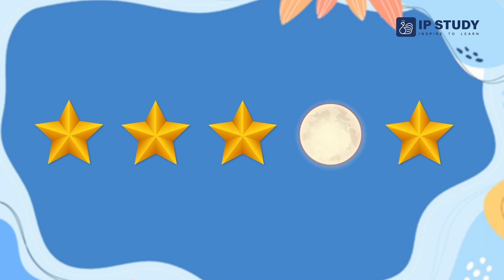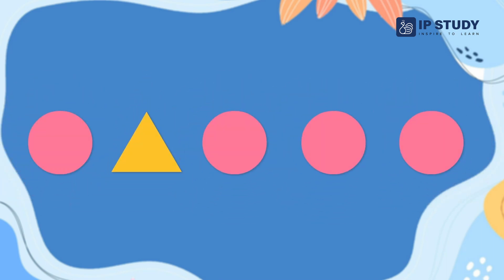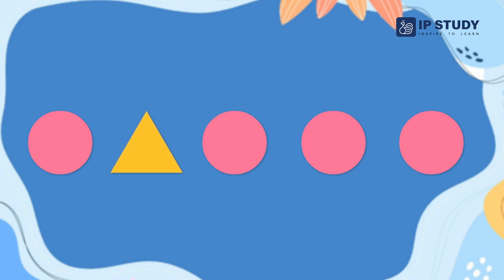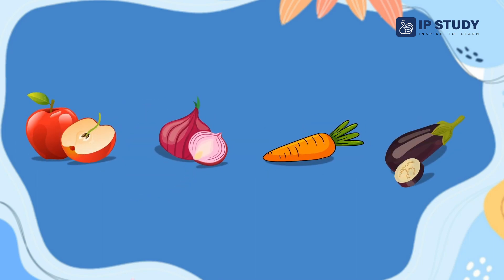Moon is different from the others, so moon is the odd one out. Now there are some shapes in a row — this is a circle, this is a circle, this is a circle, this is also a circle, but this is a triangle, so triangle is the odd one out. Now can you tell me: in these objects, which object is the odd one out? Apple, onion, carrot, brinjal.